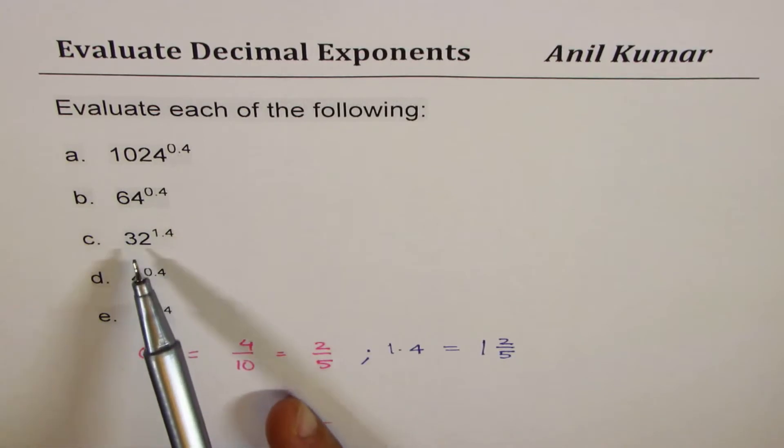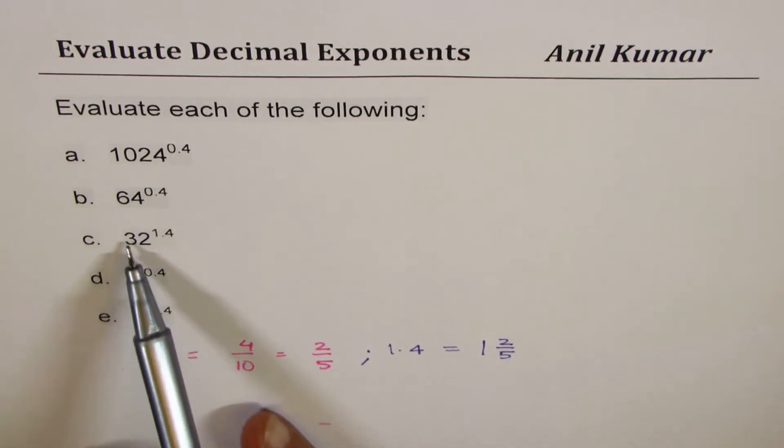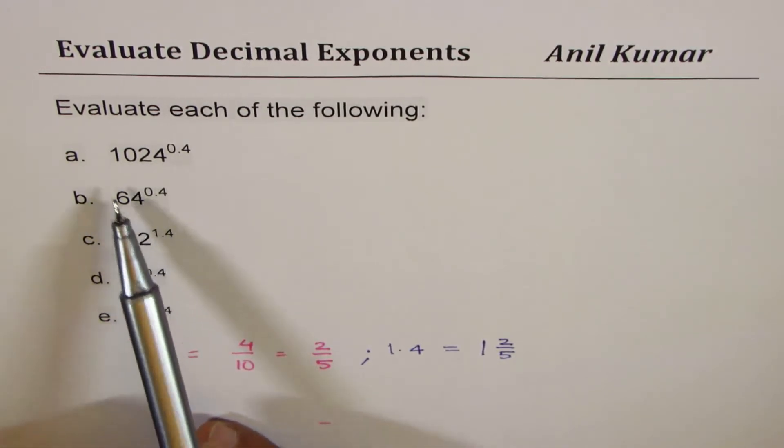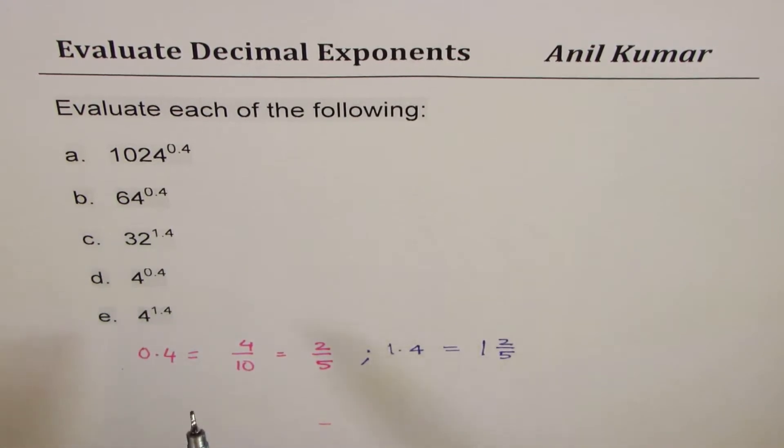Second is we have these numbers and purposely I've taken them, most of them, as powers of 2. So for example, 1024 could be written as 2 to the power of 10.